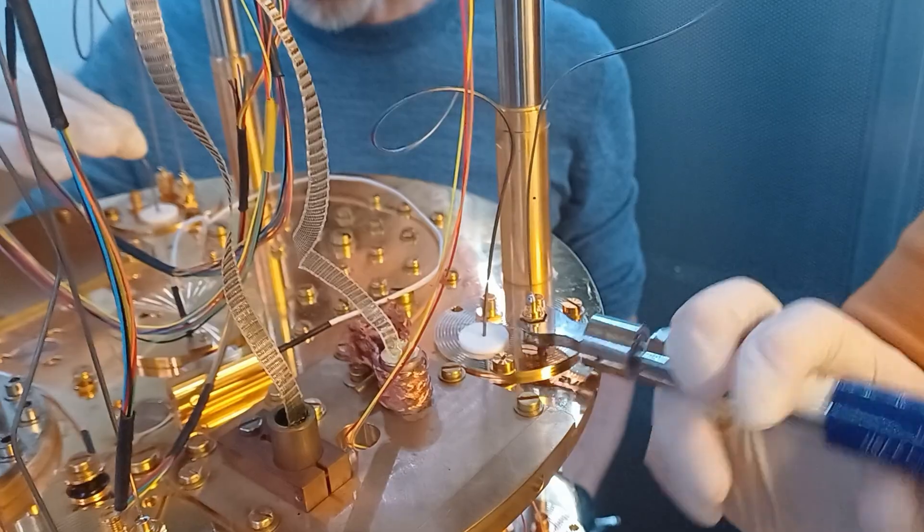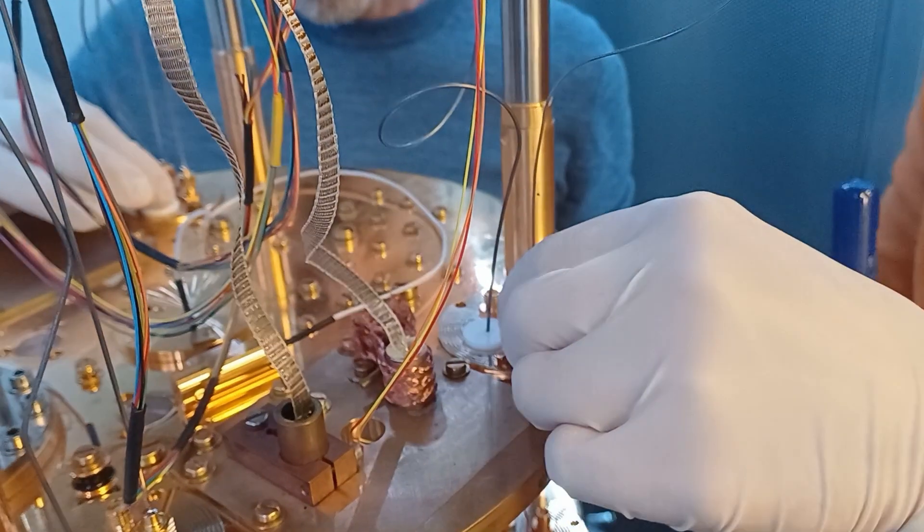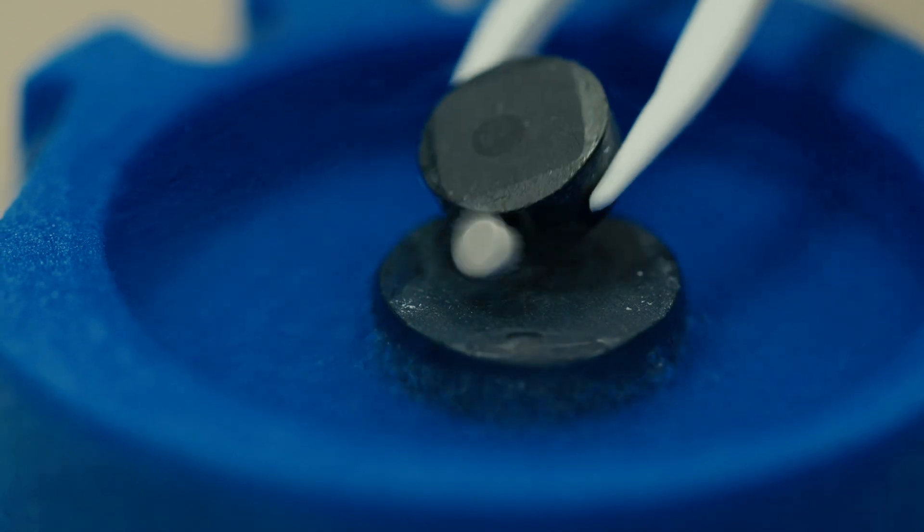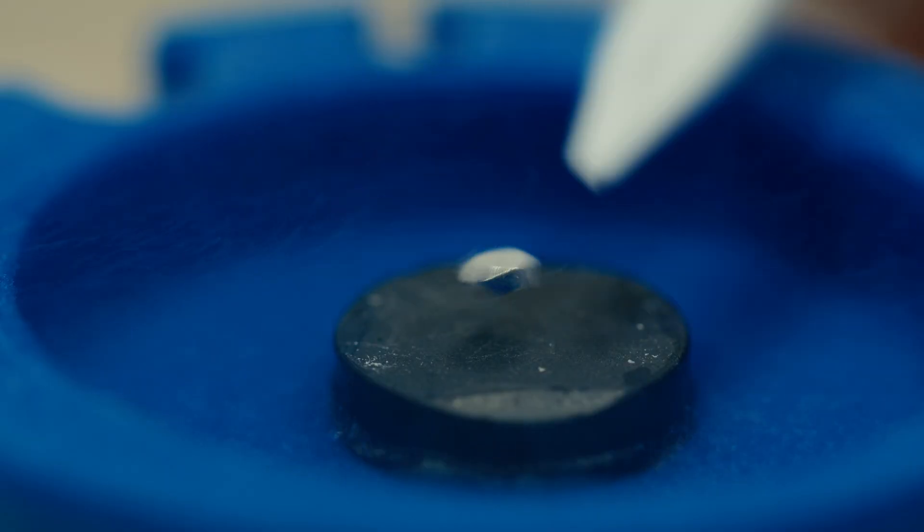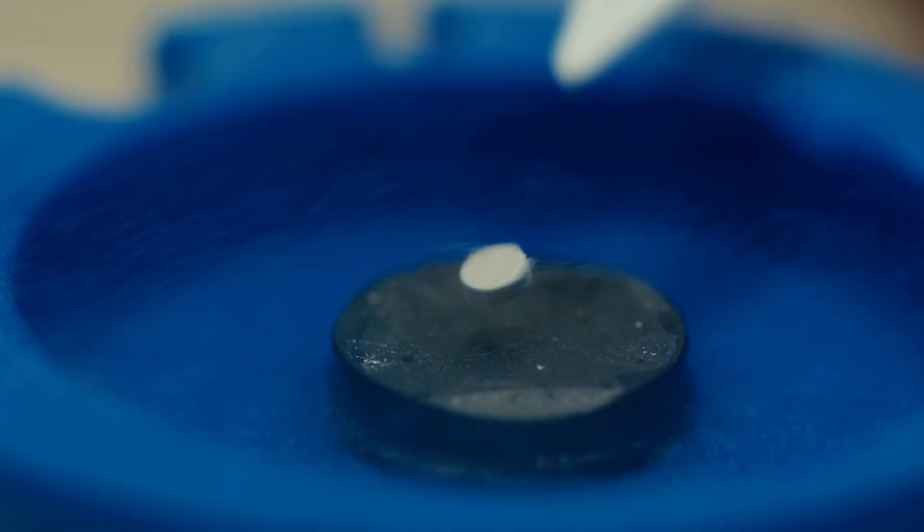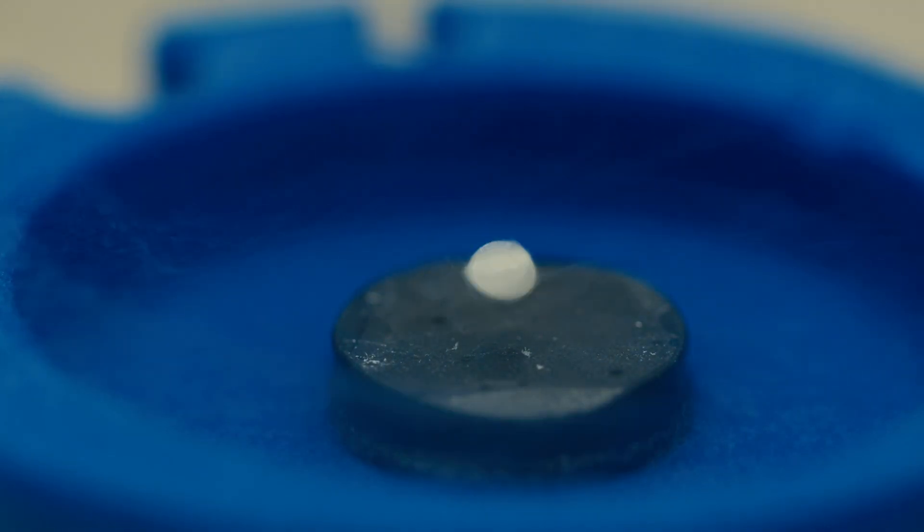For our quantum drumstick we borrow some tricks from the quantum computer. Using superconducting qubits we can hit our drum in a funny way so that it is in a quantum superposition of vibrating up and vibrating down at the same time.